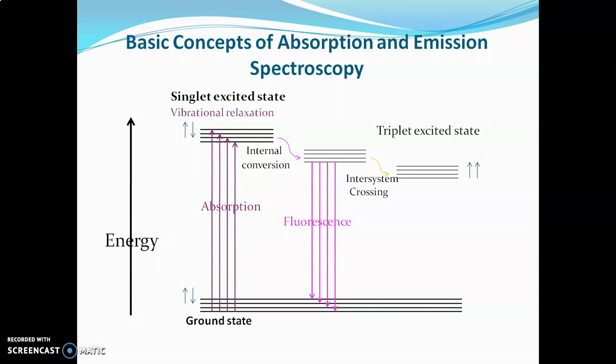Triplet excited states are less energy states, and that's why electrons spend more time in the triplet excited state. But the triplet excited state is also an unstable excited state, and finally the electron loses its energy in the form of radiation and comes back to the ground state. This loss of energy in the form of radiation is called phosphorescence. This diagram explains the theory and principle of all three phenomena: absorption, fluorescence, and phosphorescence.